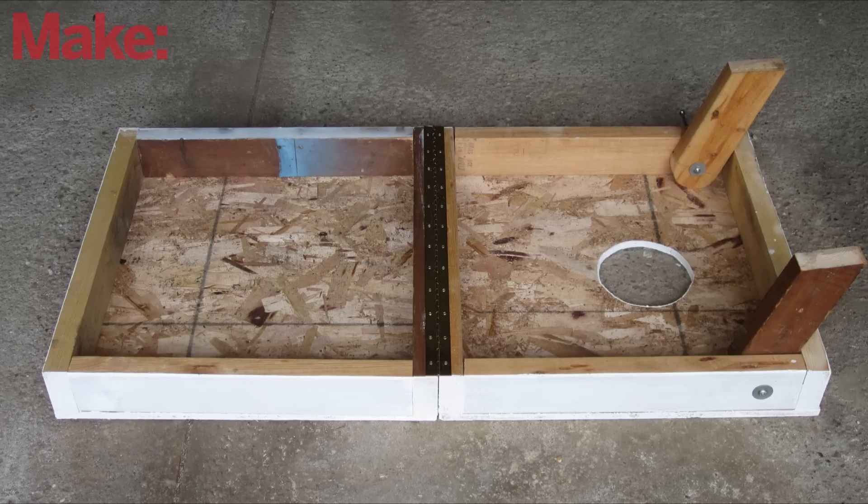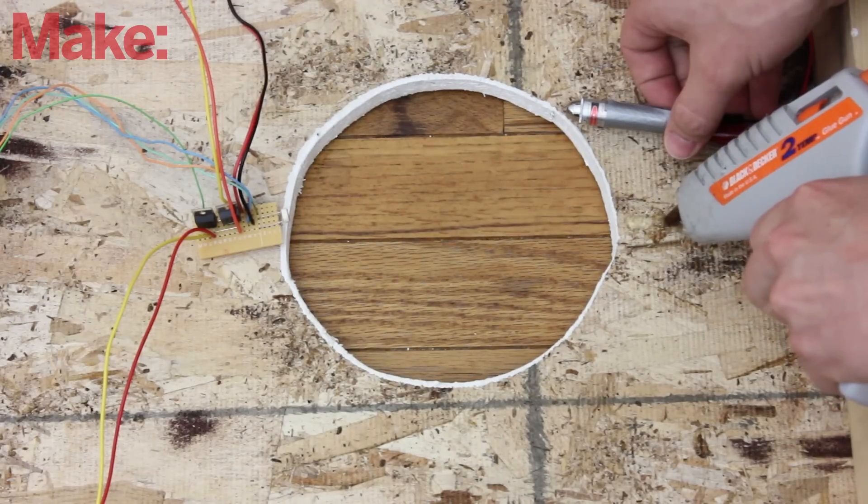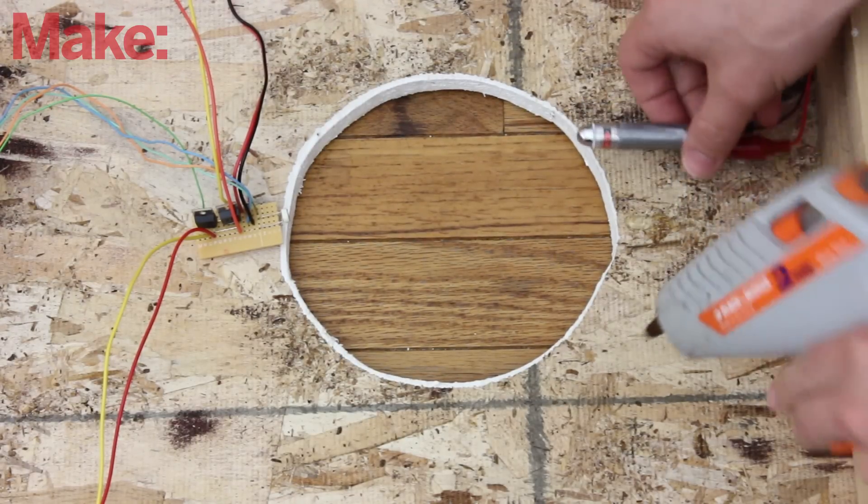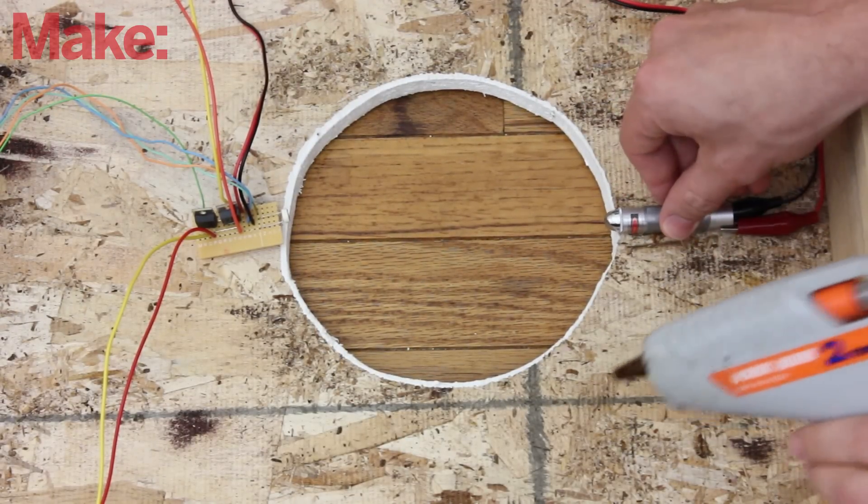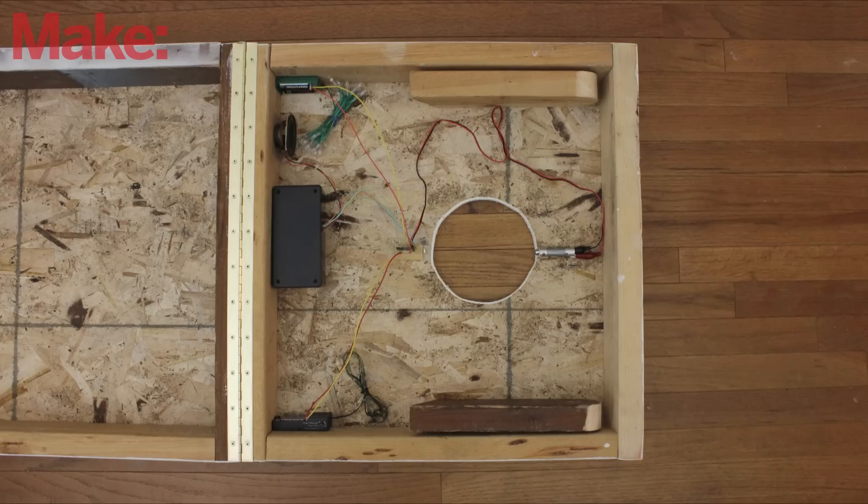Now you need to attach all the parts to the game board. Start by gluing the laser pointer and the light sensor to opposite sides of the hole. Then attach the rest of the parts to the underside of the board wherever it's convenient.